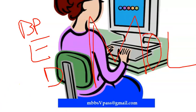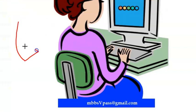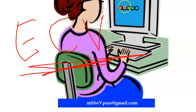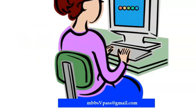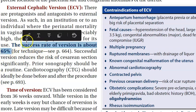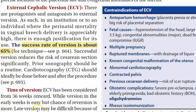The first thing we will talk about is external cephalic version — we will first try to correct the breech. External cephalic version has a success rate of about 65%. It is done after 36 weeks of pregnancy, when they will try to rotate the baby from outside.